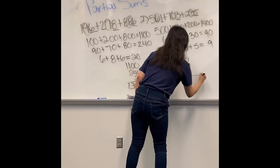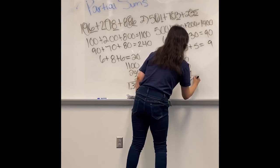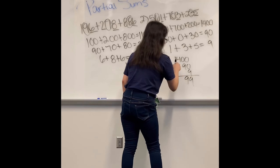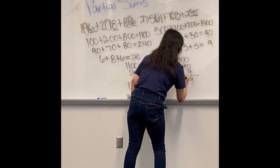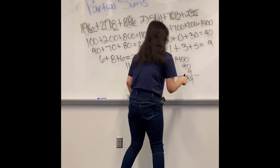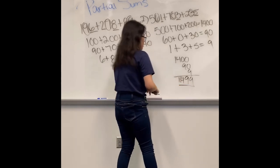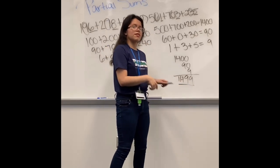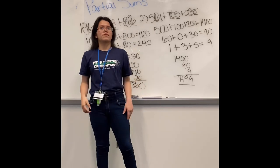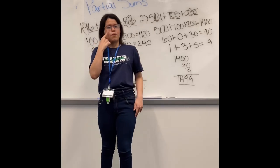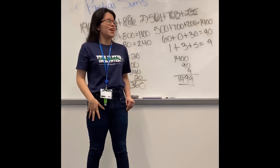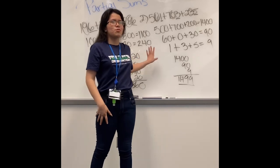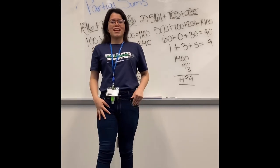Now line them up: 9 plus 0 is 9, 9 plus 0 again is 9, and then 4 and 1 bring them down — one thousand four hundred ninety-nine. That's the answer. This is the way to solve through partial sums. Thank you.